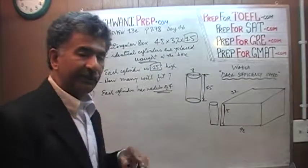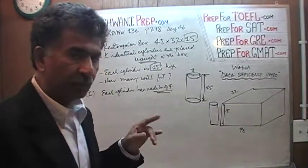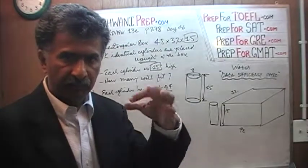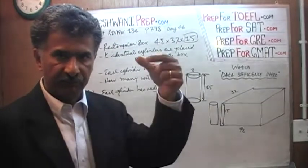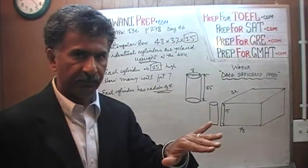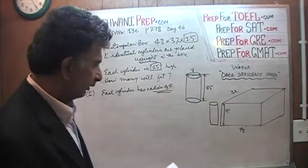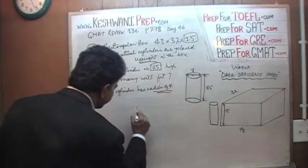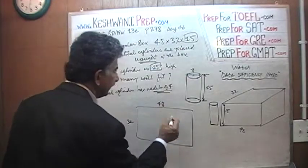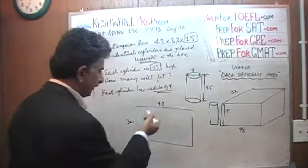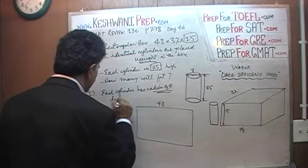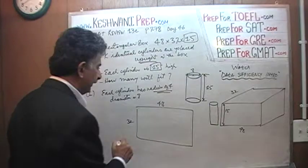All we have to deal with is the 2-dimensional floor. How many cylinders can we fit on the floor? Because the height of the cylinder equals the depth of the box, we just look at the floor. The floor is 32 by 48, and the diameter of each cylinder is 8.